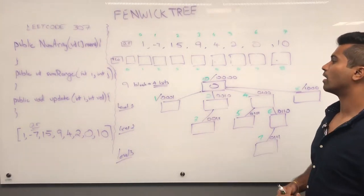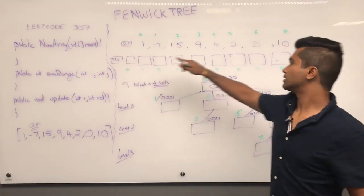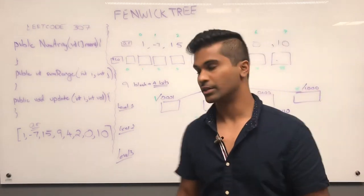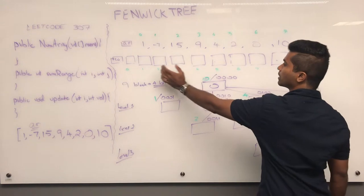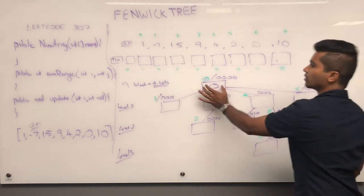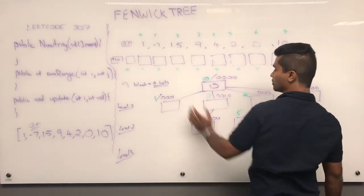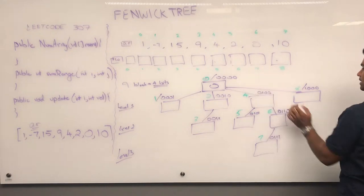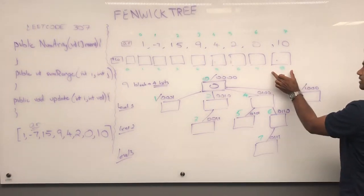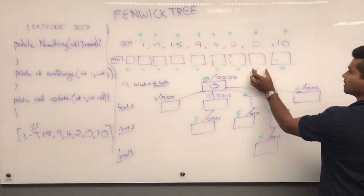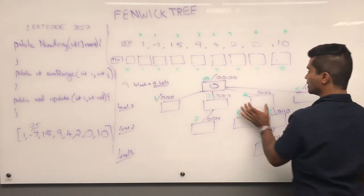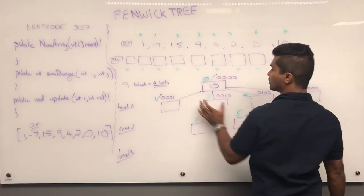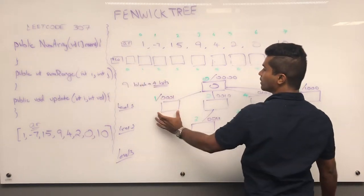We've pretty much built the skeleton of our Fenwick Tree. This is just initialized. Our tree diagram is a logical representation of which blocks are connected. Block 0 maps to 0, 1 to 1, and so on up to 8 to 8. The parent of 8 is 0, parent of 7 is 6, parent of 6 is 4, parent of 4 is 0, parent of 3 is 2, parent of 2 is 0, parent of 1 is 0.